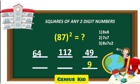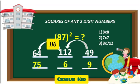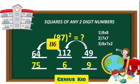Splitting 49, 9 will remain and 4 will be added to 112 to make 116. Similarly, splitting 116, 6 will remain and 11 will be added to 64 to make 75. So, the answer for 87 square is 7569.